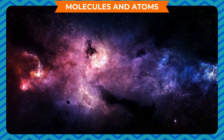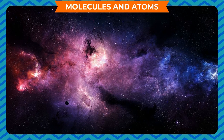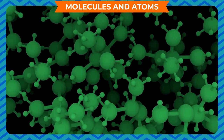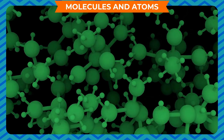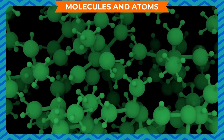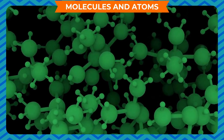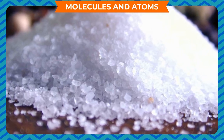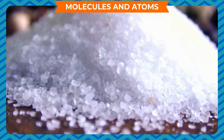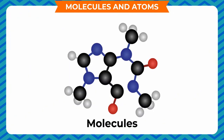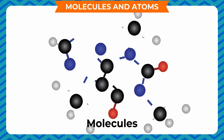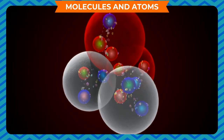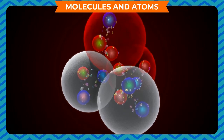Molecules are so small that we cannot see them with the naked eye. A molecule is the smallest particle of a substance which has all the properties of that substance. For example, a sugar molecule is the smallest particle that has all the properties of sugar. Molecules can be further broken down into smaller particles, which lose some properties of the original substance.